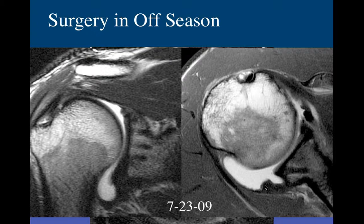Just from capsular avulsion - going back, the capsule pulls on the posterior labrum. The humeral head under load shears off the posterior labrum, just like with an anterior dislocation you shear off the anterior inferior labrum. If you bench press inappropriately and go back under heavy load, the humeral head will shear off the posterior labrum.